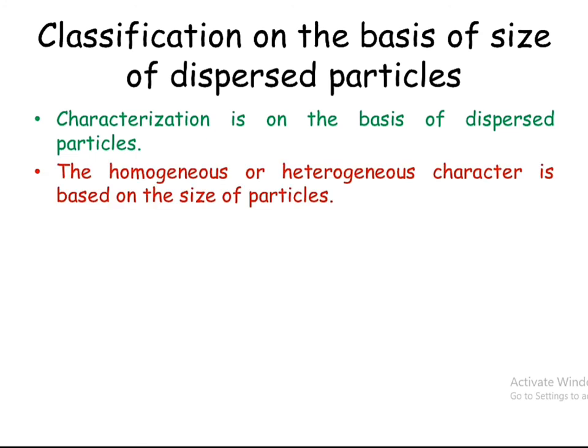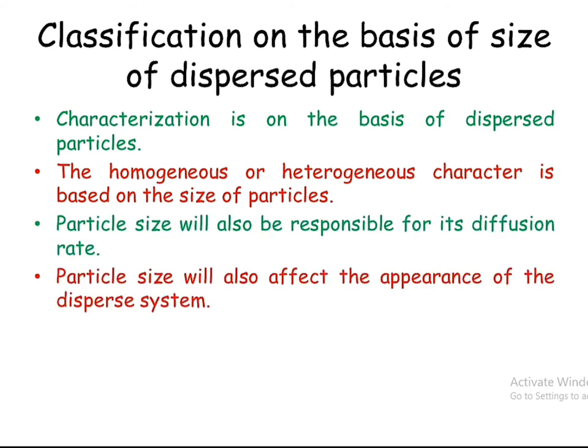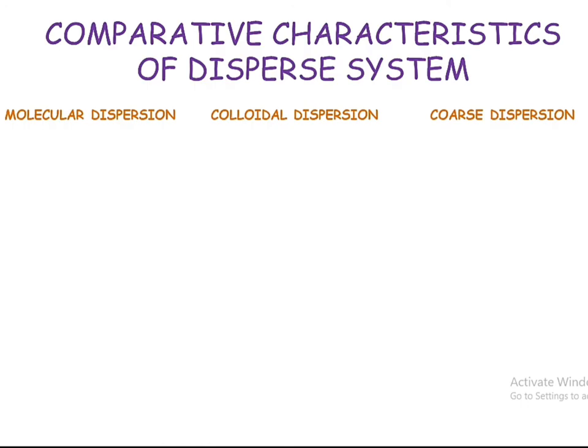Dispersed systems are characterized on the basis of particle size, which defines whether the system will be homogeneous or heterogeneous in character. Particle size is also responsible for its diffusion rate, and it affects the appearance of the dispersed system — such as turbidity, clearance, etc.